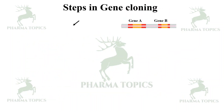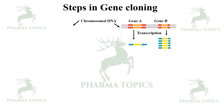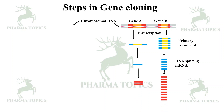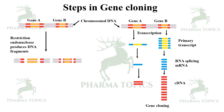Looking at the steps in gene cloning diagrammatically: two genes — Gene A and Gene B — are taken from chromosomal DNA. When they get transcribed, primary RNA transcripts are produced. After RNA polymerase acts on it, splicing occurs, producing mRNA. That is expressed to create cDNA libraries — this is gene cloning. The entire DNA sequence can also be cloned using restriction endonucleases, which produce different fragments that can be ligated to produce the full DNA sequence.